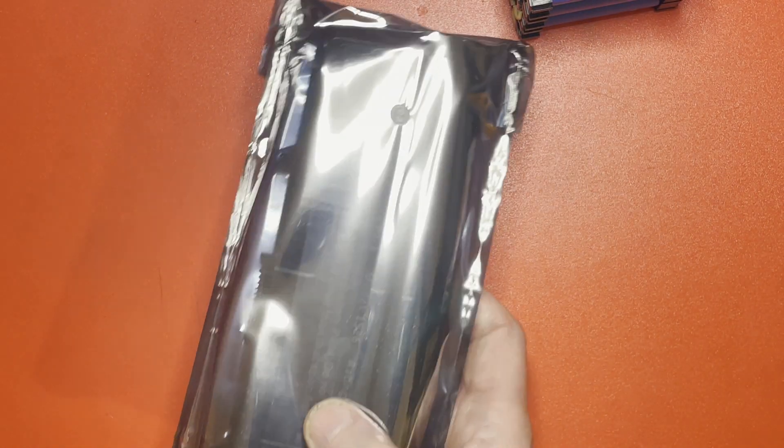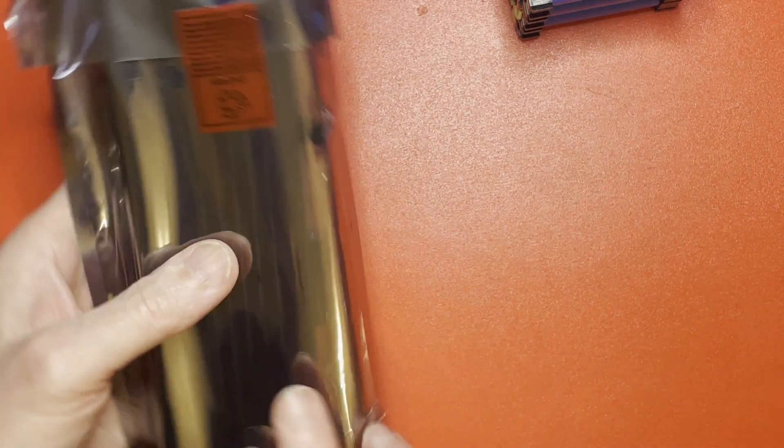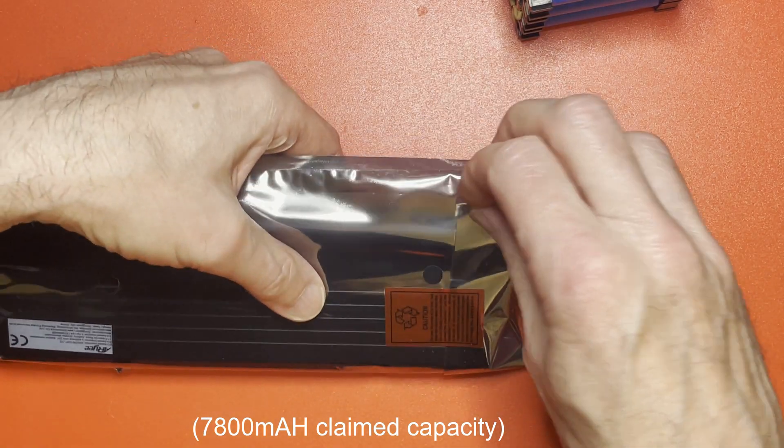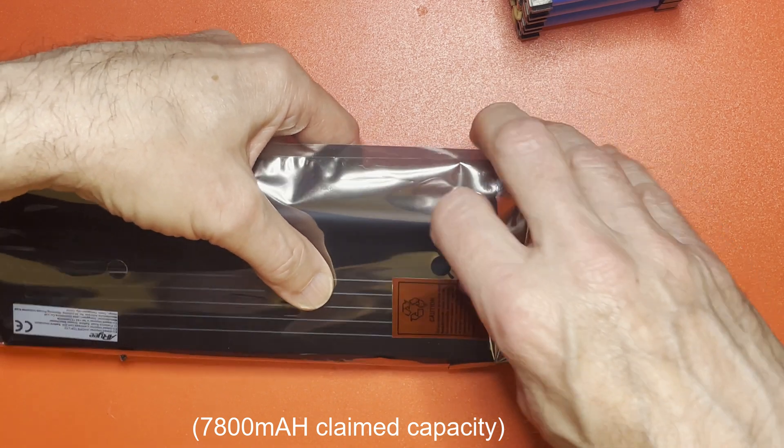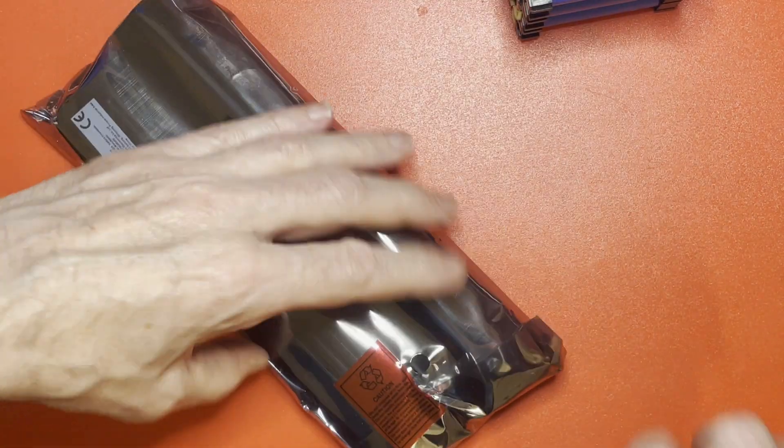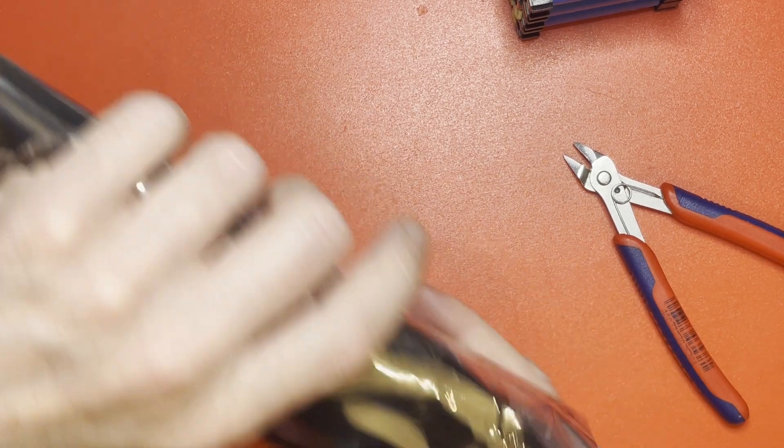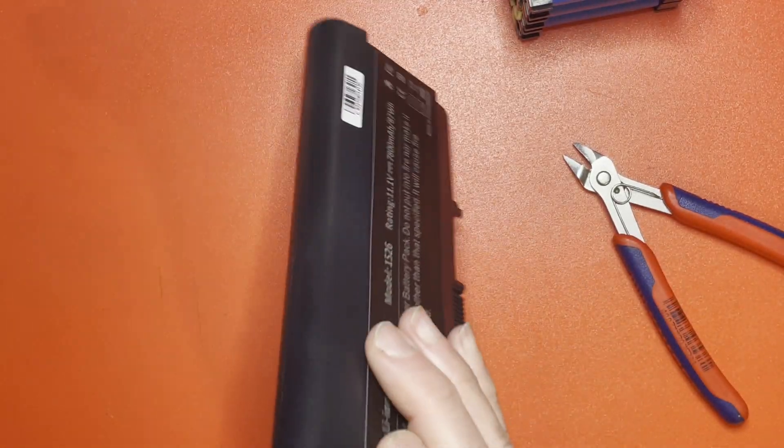I got two of these a while ago to use for one of my own projects. These are 7.8 amp hour, or 7800 milliamp hour rated. Oh, that's tight. I haven't cut. The security tech's quite good. There should be nine 18650s in them.